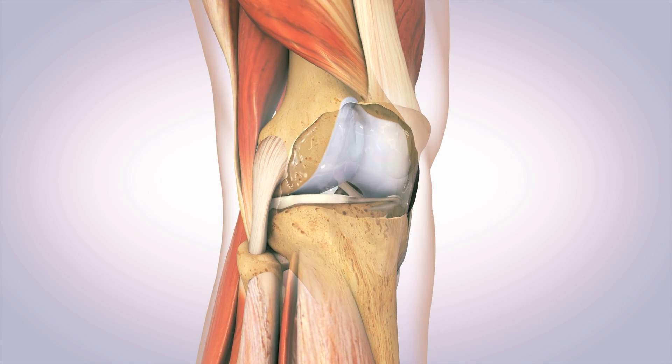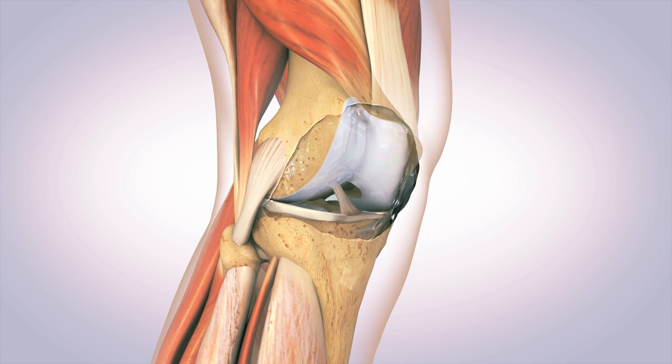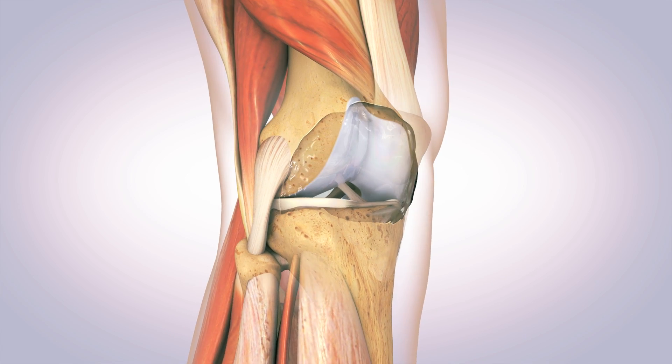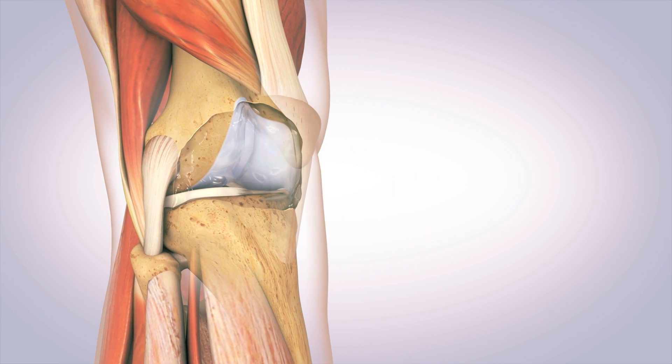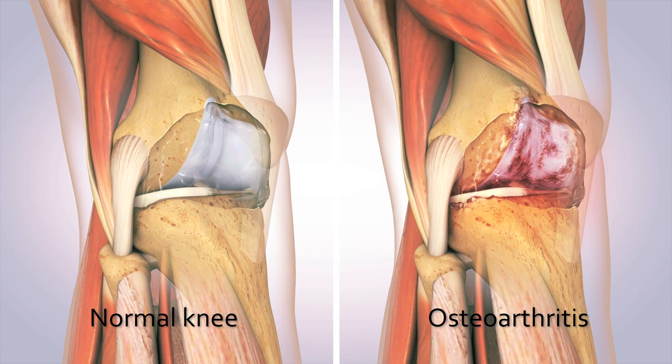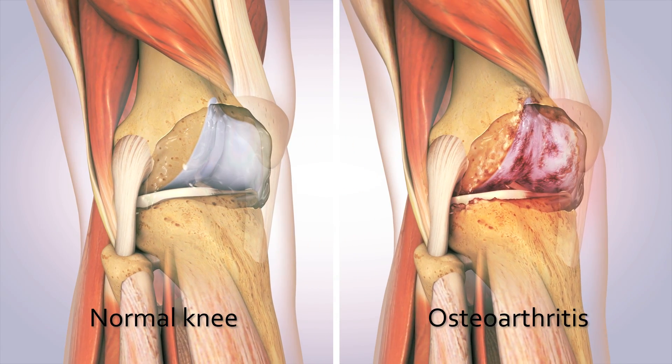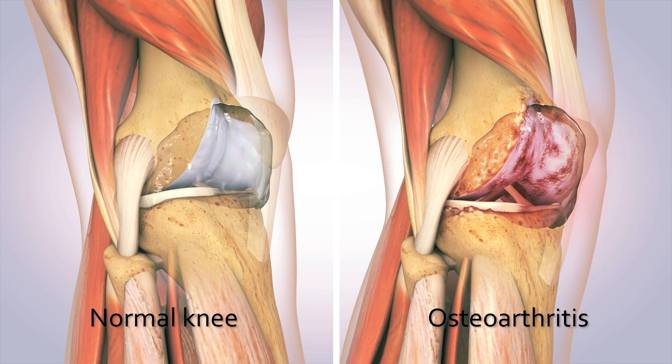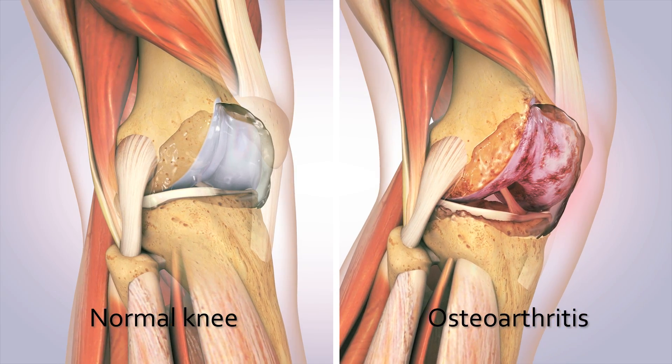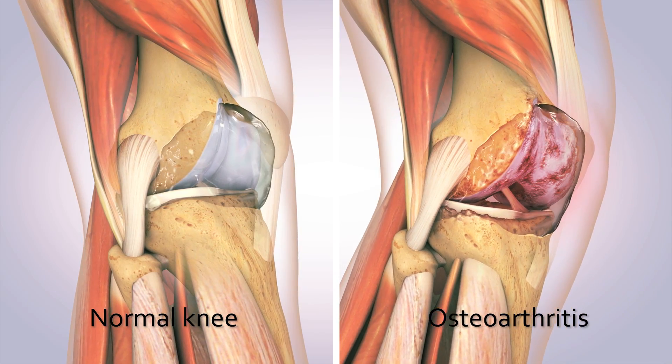Osteoarthritis of the knee is a chronic disease characterized by loss of cartilage, inflammation, joint dysfunction, pain and disability.